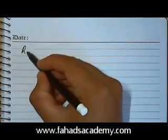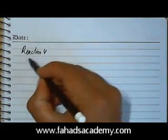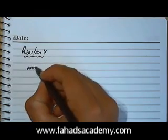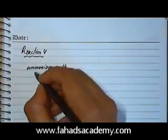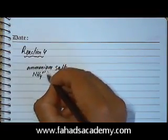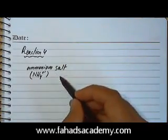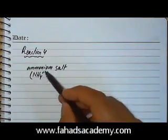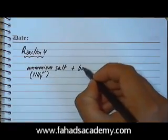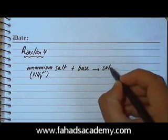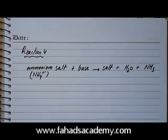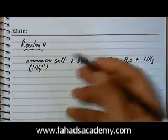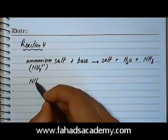Now we'll move on to reaction four relating acid bases and salts. In this reaction you have an ammonium salt — NH₄⁺ is the ammonium ion, and in a salt it replaces the H in an acid. So any acid with H replaced by ammonium is an ammonium salt. When an ammonium salt reacts with a base, it produces another salt, a water molecule, and ammonia gas NH₃.